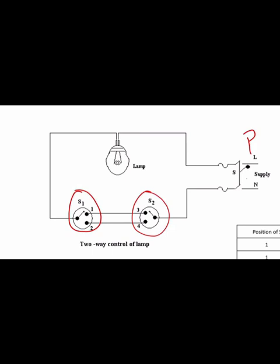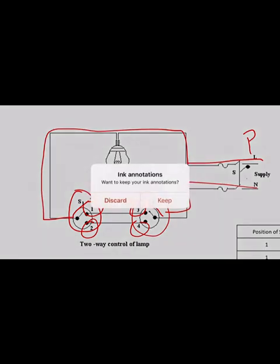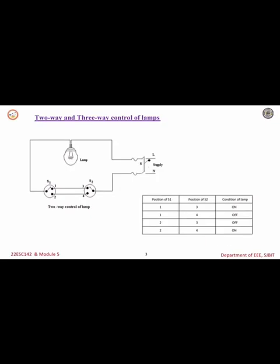Each switch has two terminals. Between the two switches, we make connections with wires: between terminals one and three, and between terminals two and four. When switch S1 is at position one and switch S2 is at position three, the current flows through the lamp, goes to S1 at position one, then through the one-to-three connection, reaching S2 at three and then to neutral — giving a closed path, so the lamp will glow.